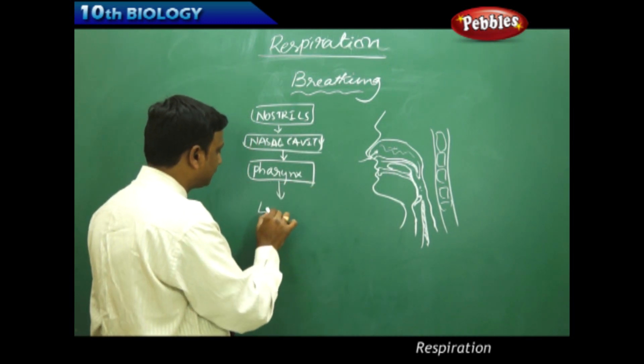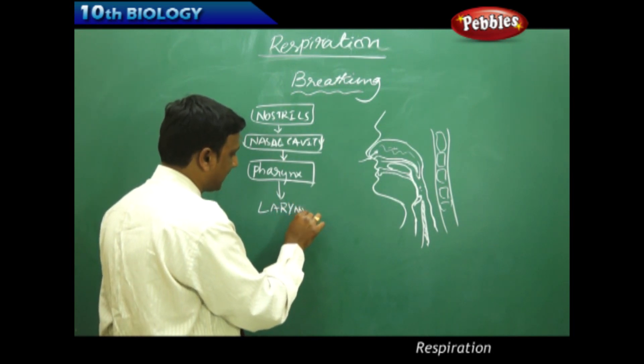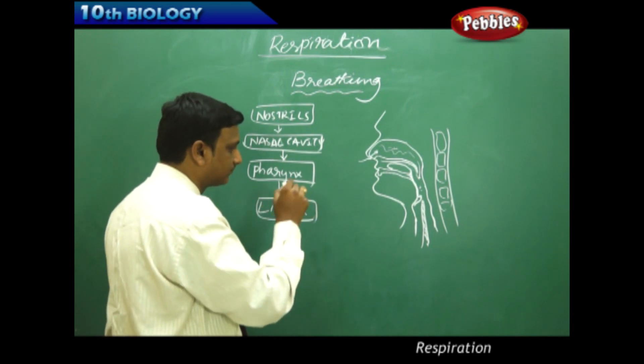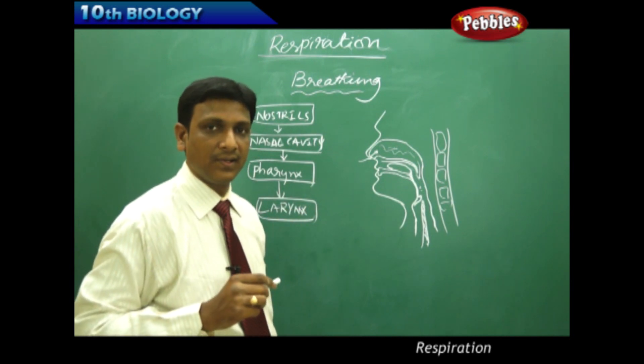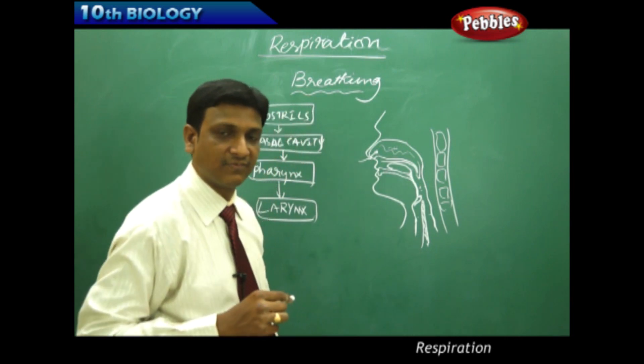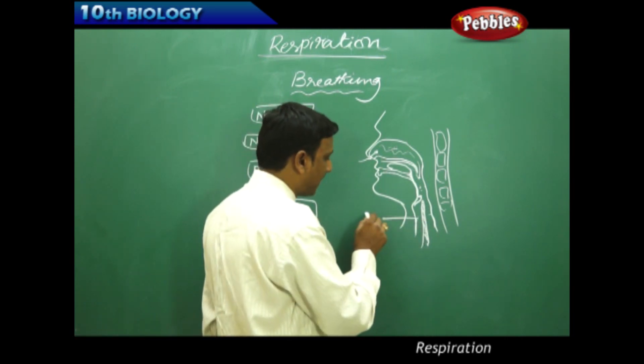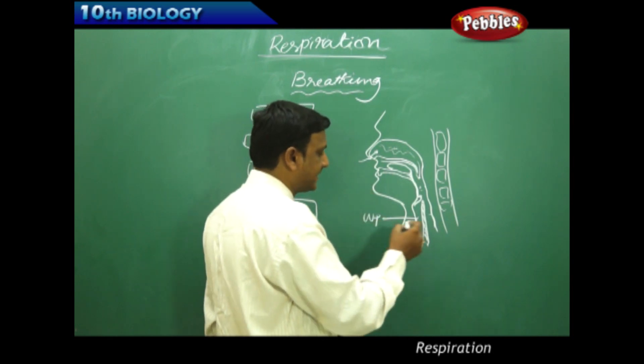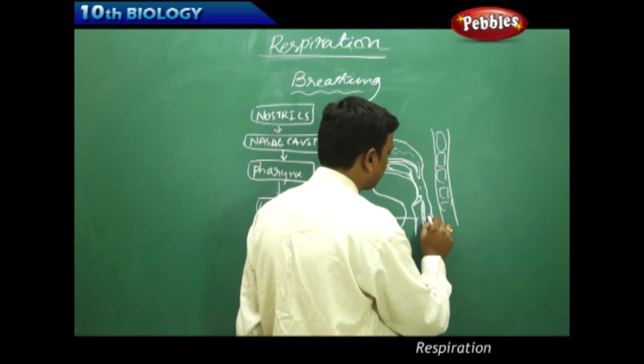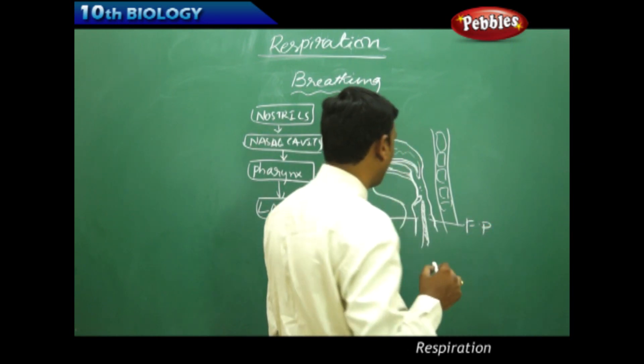From pharynx to larynx. So here there are two ways for the air to go in or for the food to go in. One is windpipe or the trachea. The other is food pipe or esophagus.